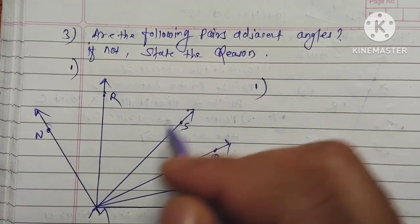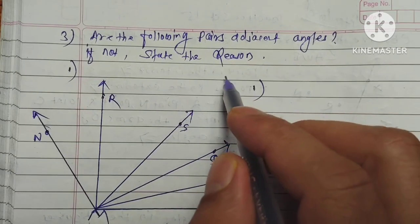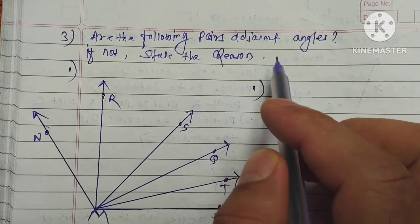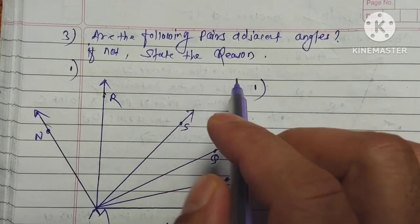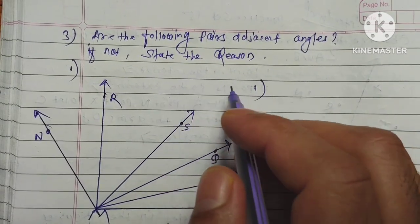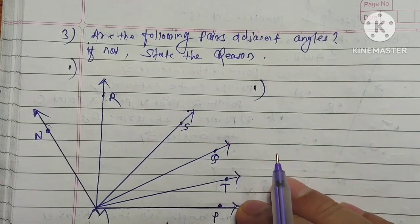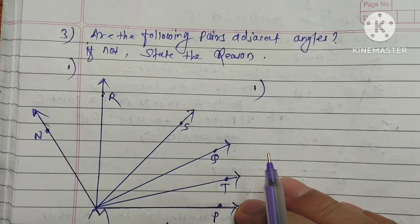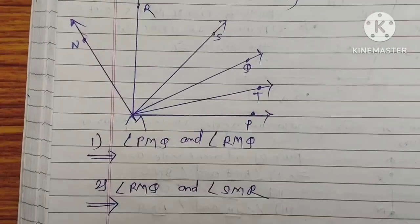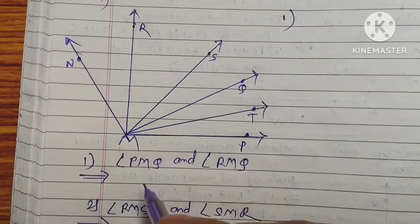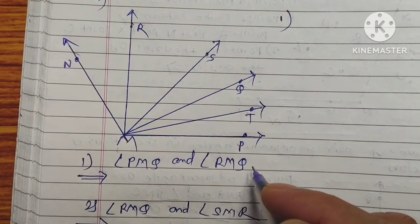The next question is: are the following pairs adjacent angles? If not, state the reason. The first pair is angle PMQ and angle RMQ. Let's see the figure.